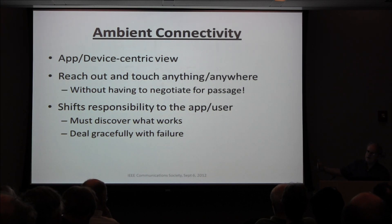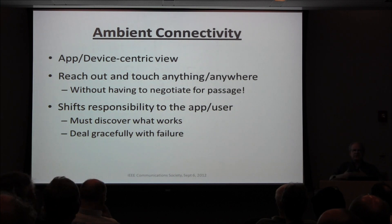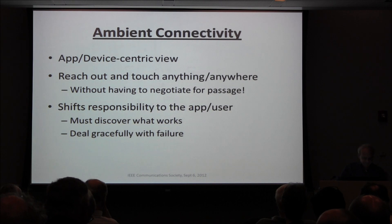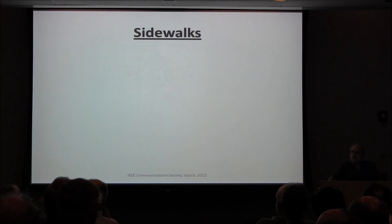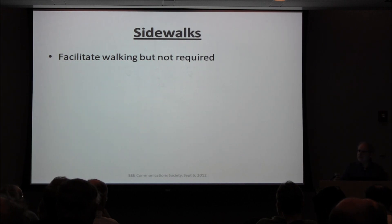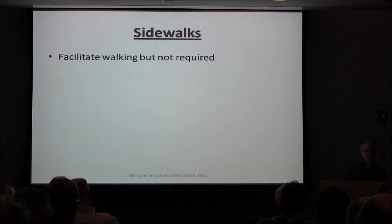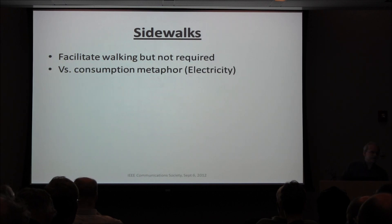The thing about ambient connectivity is it's about geographic coverage — this area I've got ambient connectivity in. But you can't discriminate who gets on. Once you need authentication, the model breaks. So it's not Wi-Fi for the city, but dense coverage of an apartment house or whatever. The model for this is sidewalks: we use sidewalks to facilitate walking — they're not required for walking. You can have radios and communicate without your neighbors, but if you want a lot of capacity, you hire people to put in things to facilitate. It's not a consumption metaphor — you're not worried about somebody using up the sidewalk.